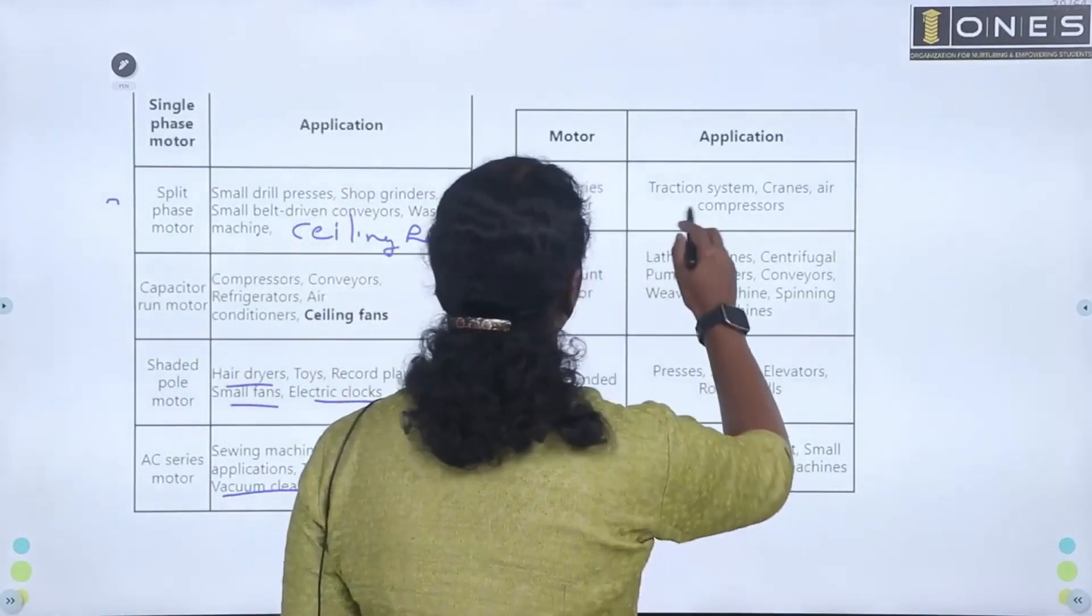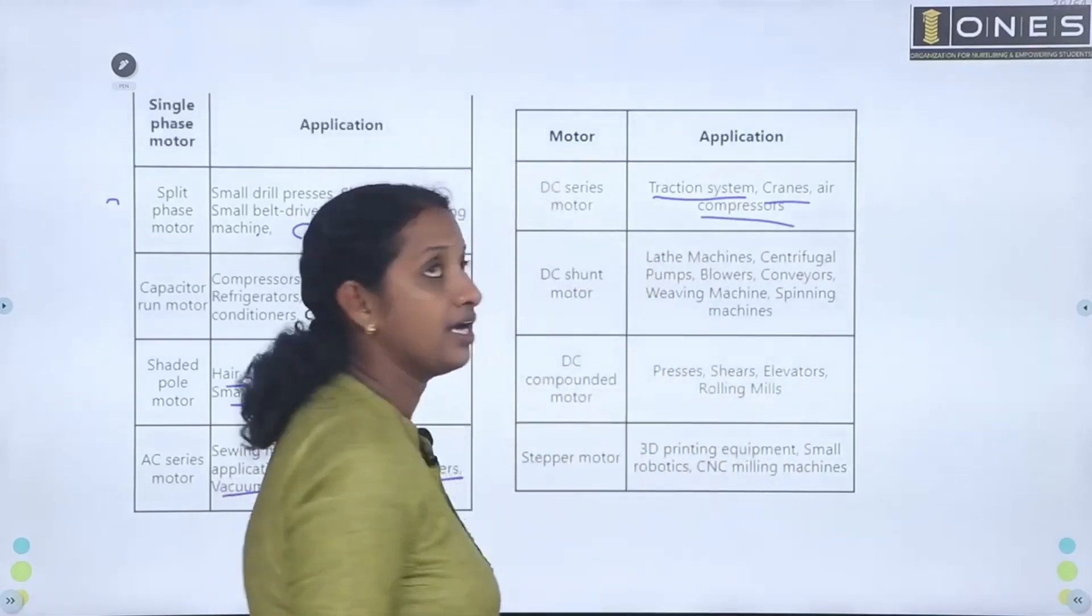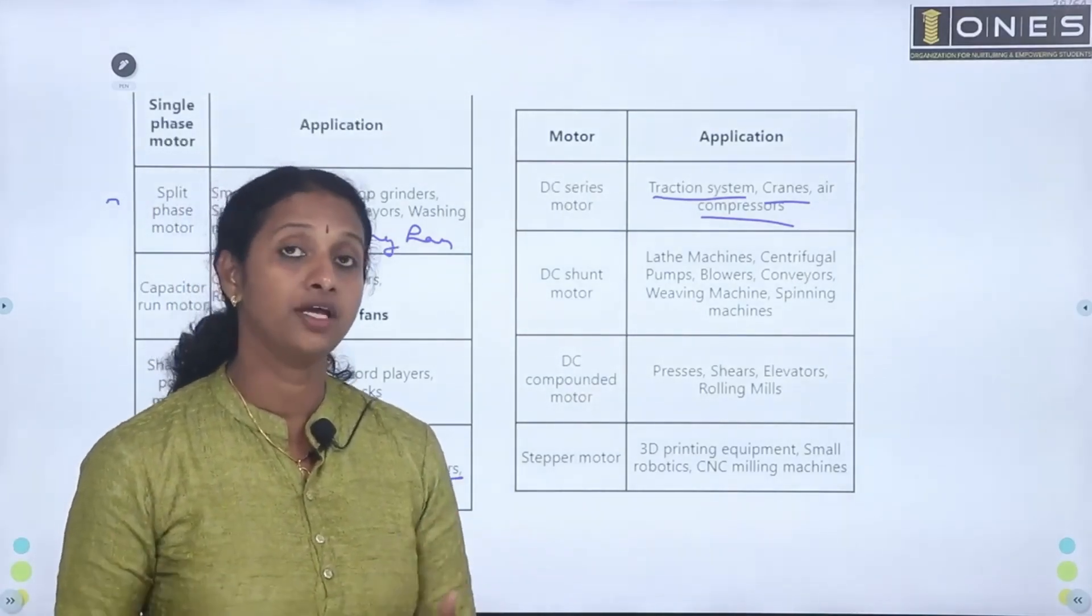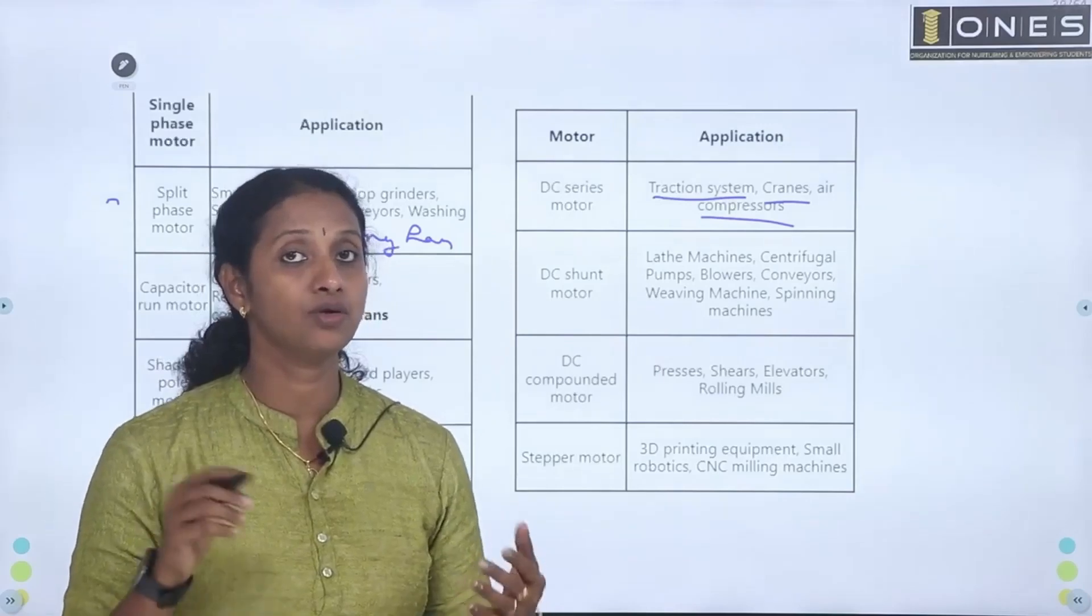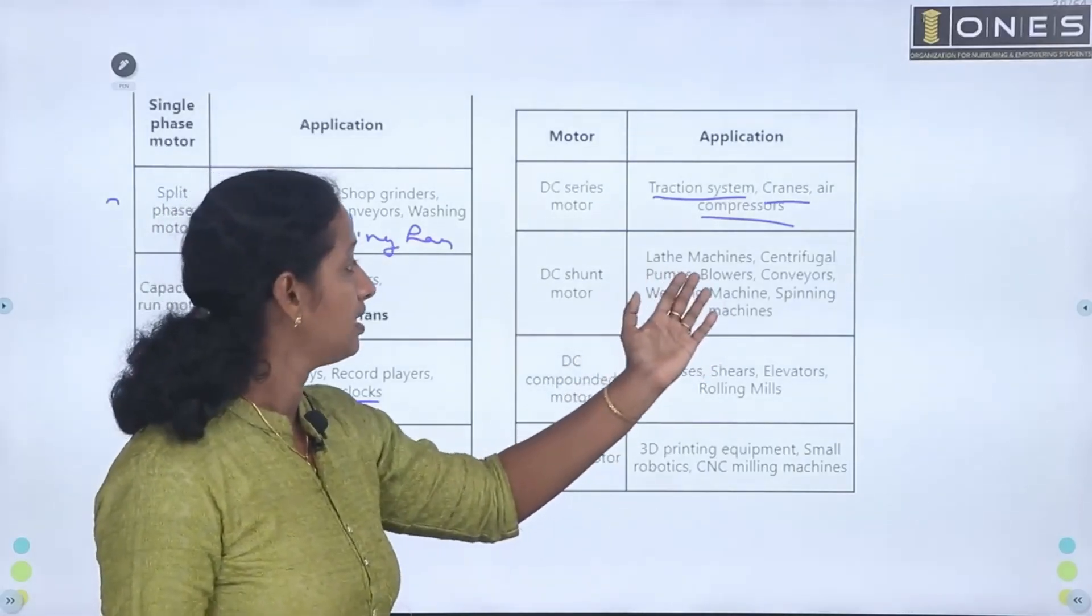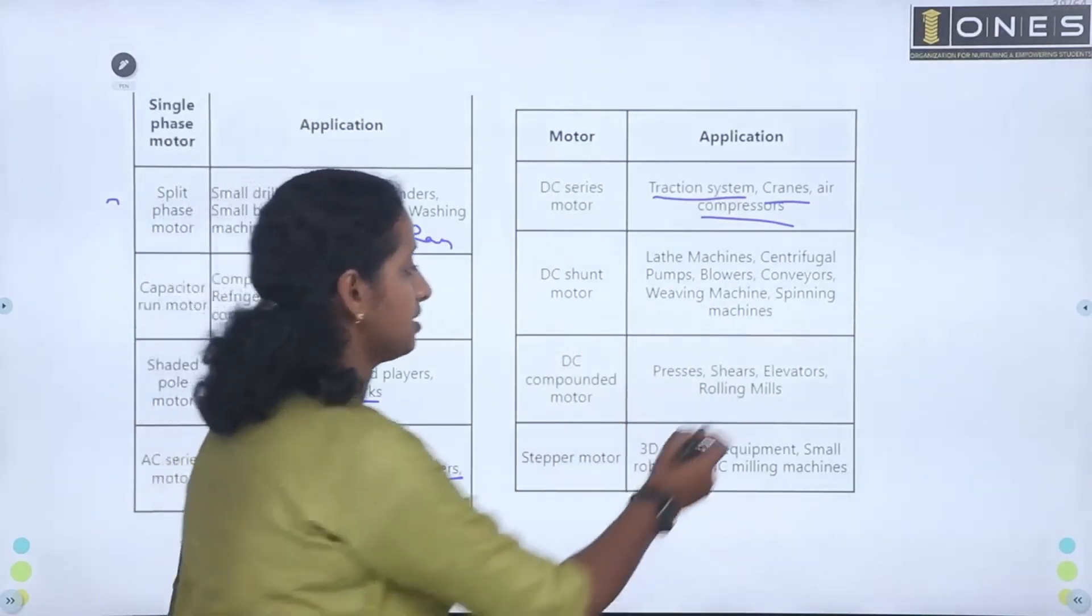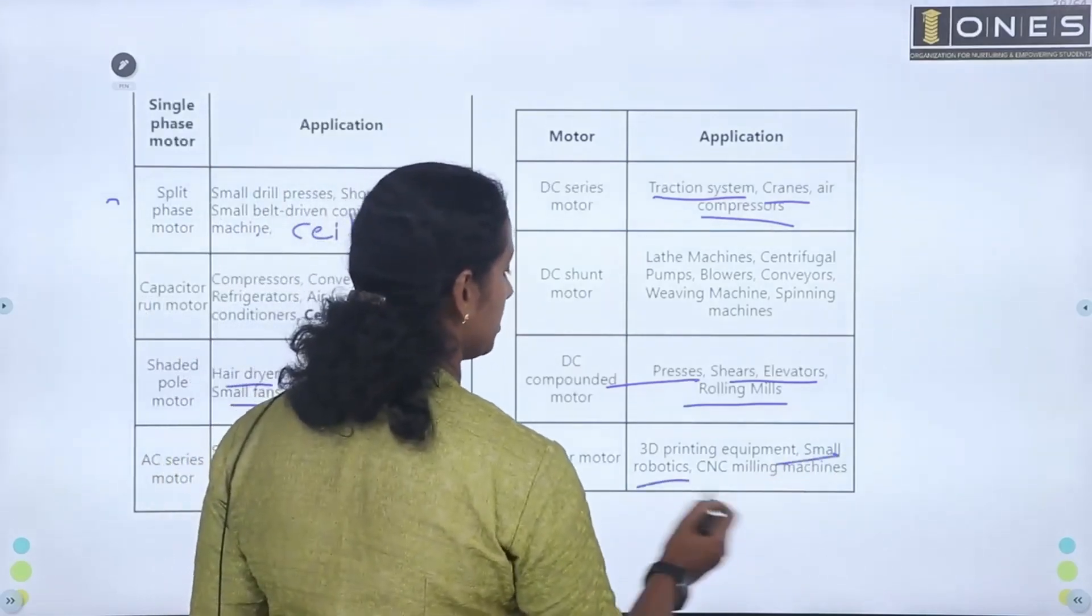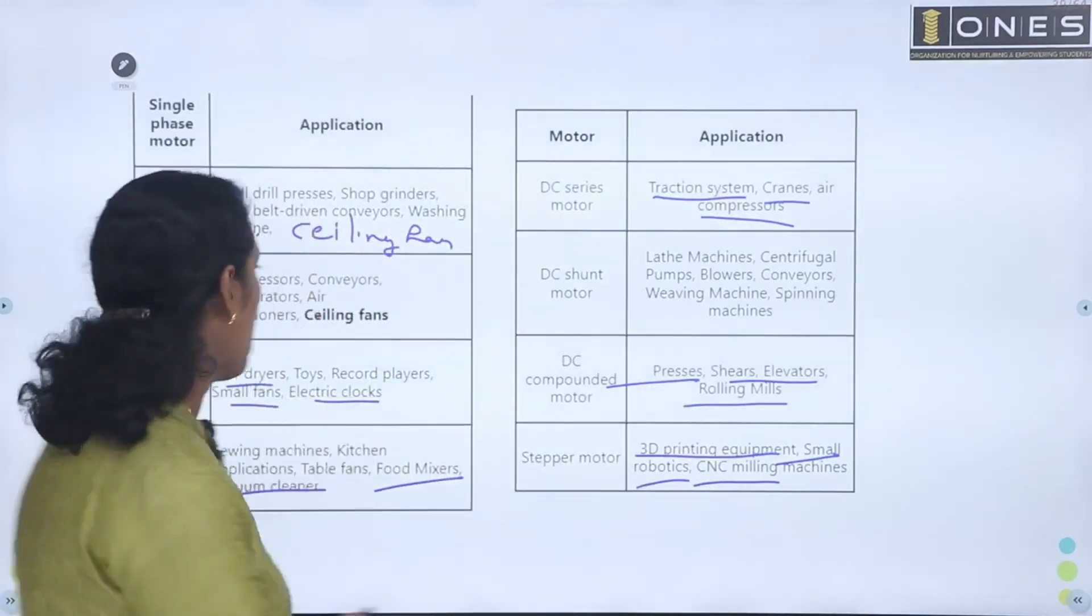DC series motor - traction, crane, air compressor. Rolling mills, elevators. Stepper motor is used for small robotics, CNC machines, 3D printing equipment. This is the stepper motors in the application.